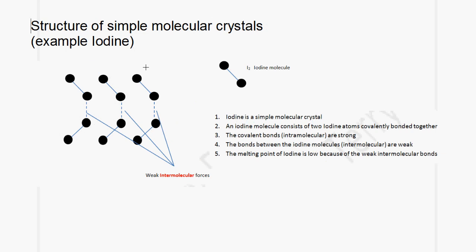Let us now look at the structure of simple molecular crystals. The example we will be using is iodine. Iodine exists as I₂, which means that we have two iodine atoms joined together by a covalent bond. An iodine molecule consists of two iodine atoms covalently bonded together. The covalent bonds, or intramolecular bonds, are strong. The bonds between the iodine molecules, or the intermolecular bonds, are weak. The melting point of iodine is low because of the weak intermolecular forces.